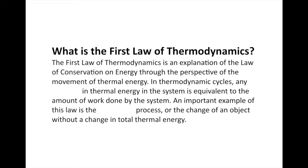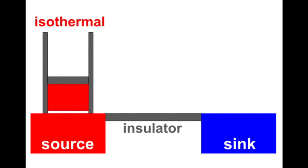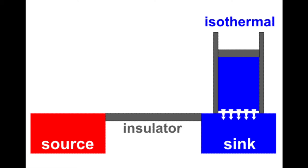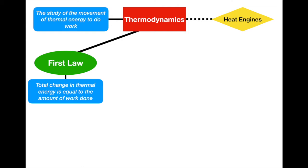The first law of thermodynamics is an explanation of the law of conservation of energy through the perspective of the movement of thermal energy. Whenever you have work and energy, the energy is transferred to work — no energy is created or destroyed in the process. In thermodynamic cycles, any change in the thermal energy in the system is equivalent to the amount of work that's done. The total change in thermal energy is equal to the amount of work done by the object. You also see the term 'adiabatic' here, which we're going to talk about next.